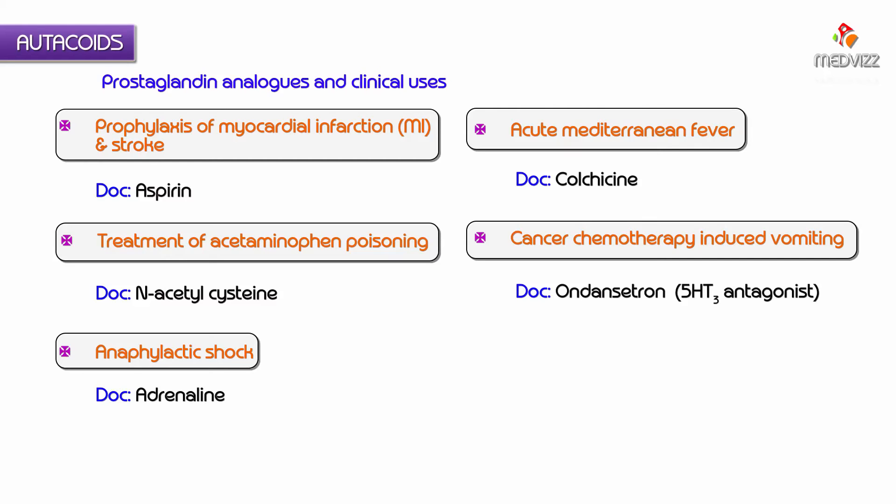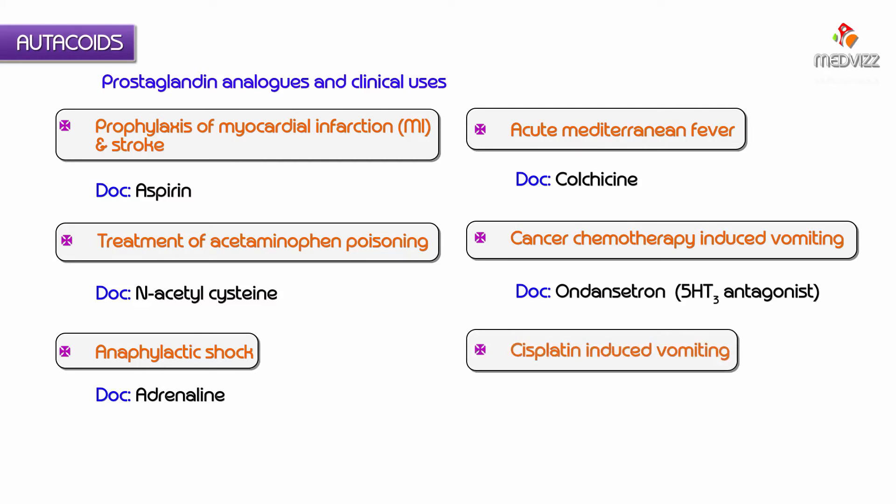For early cisplatin-induced vomiting, the drug of choice is ondansetron. For delayed cisplatin-induced vomiting, the drug of choice is aprepitant. So: early cisplatin-induced vomiting → ondansetron; delayed cisplatin-induced vomiting → aprepitant.